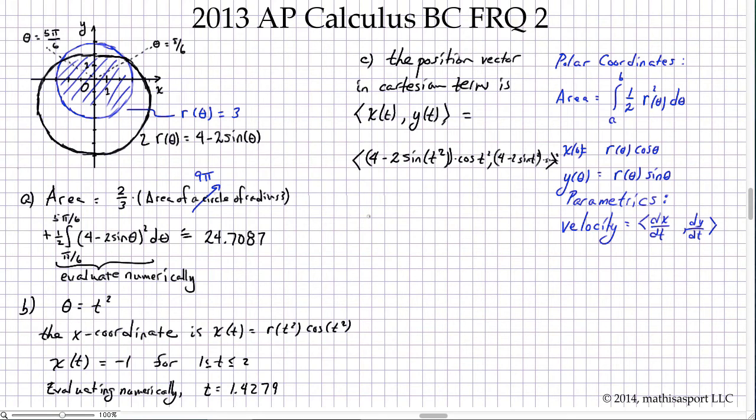That's the first aspect of it. Then the second is they want to know what the velocity is at a particular time. The velocity is dx of t dt and dy of t dt, and we're going to have to evaluate that numerically at t equals 1.5.